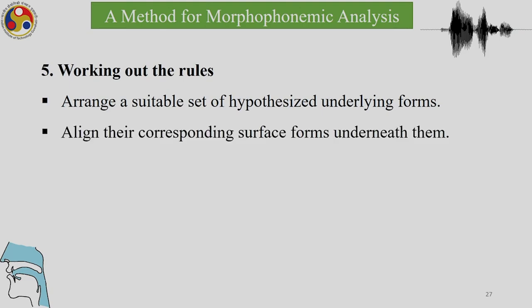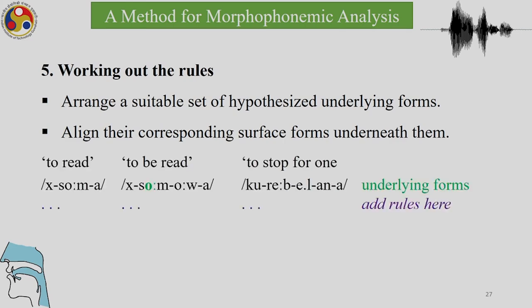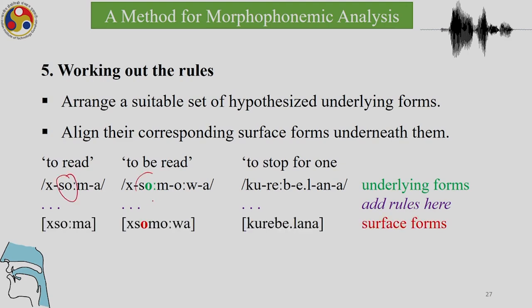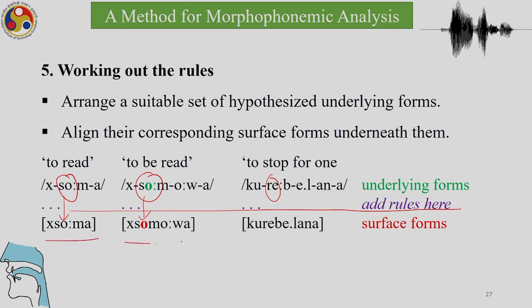We have to work out the rules by arranging a suitable set of hypothesized underlying forms and aligning their corresponding surface forms underneath them. Taking the Chimwini data we just saw — with lengthening vowels and a long A — we add our rules. Without specifying the exact rules yet, by applying them we get all the surface forms: here a lengthened O, and there a long O with a shortening, because we have put the same underlying form and the rule application gives us the correct surface forms.